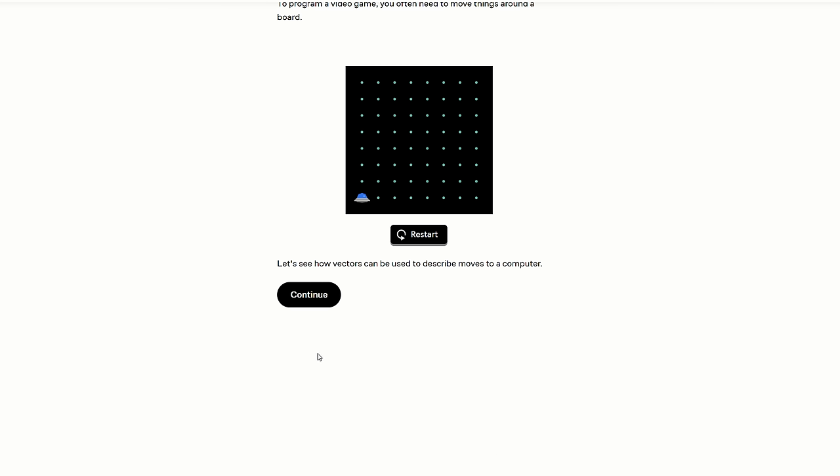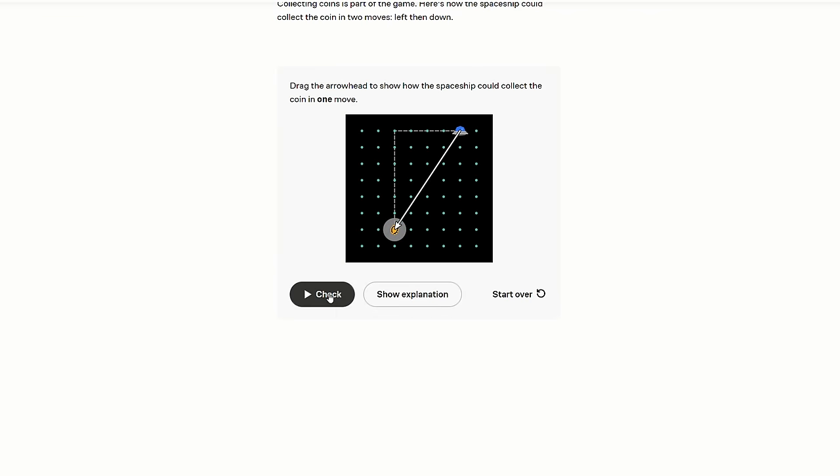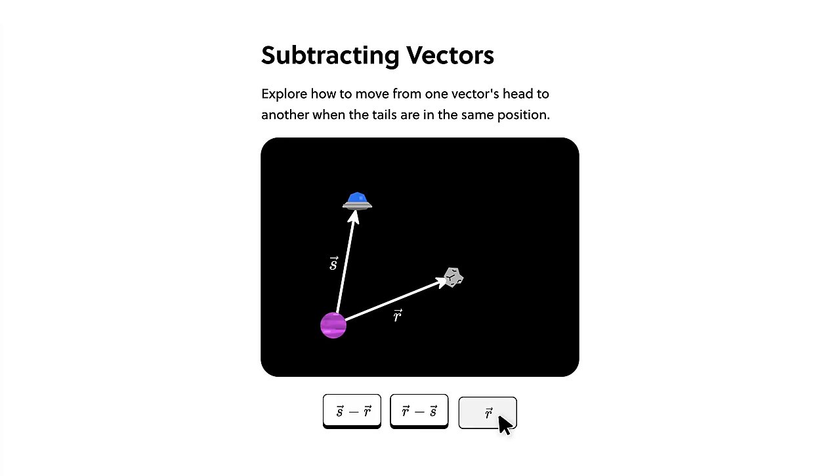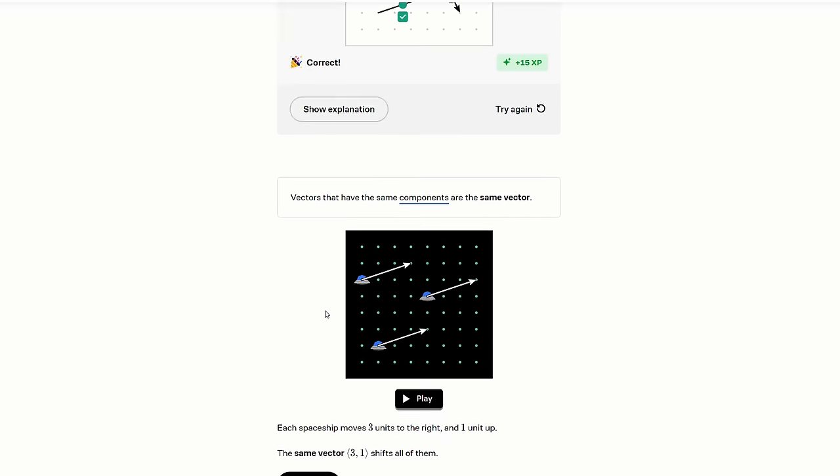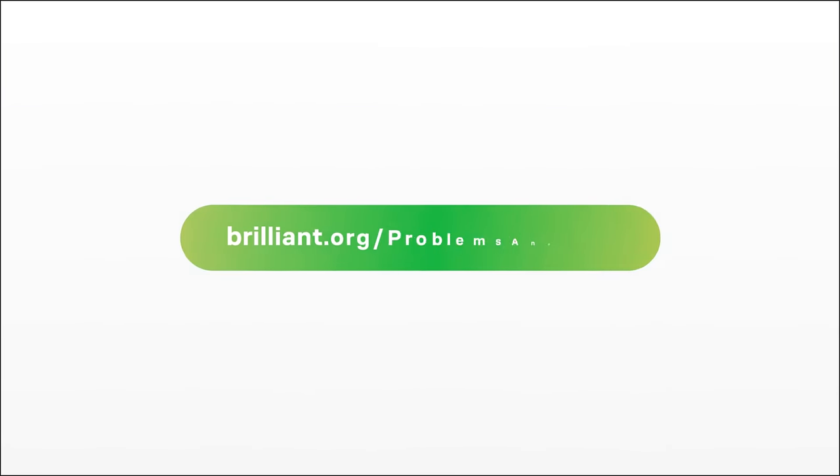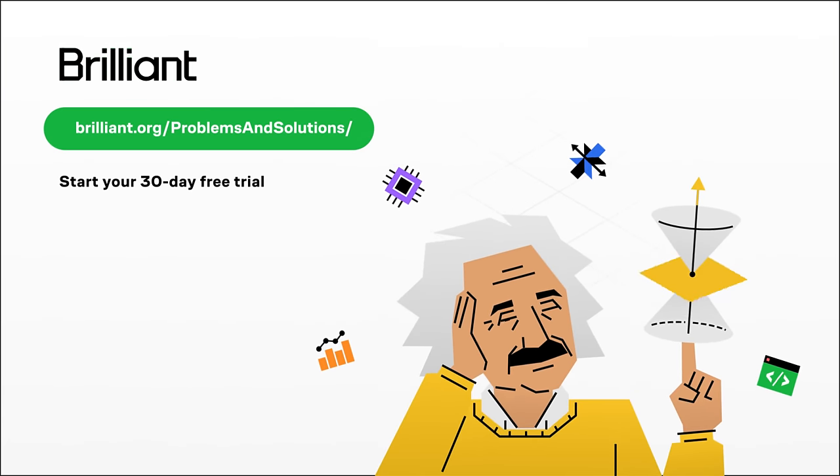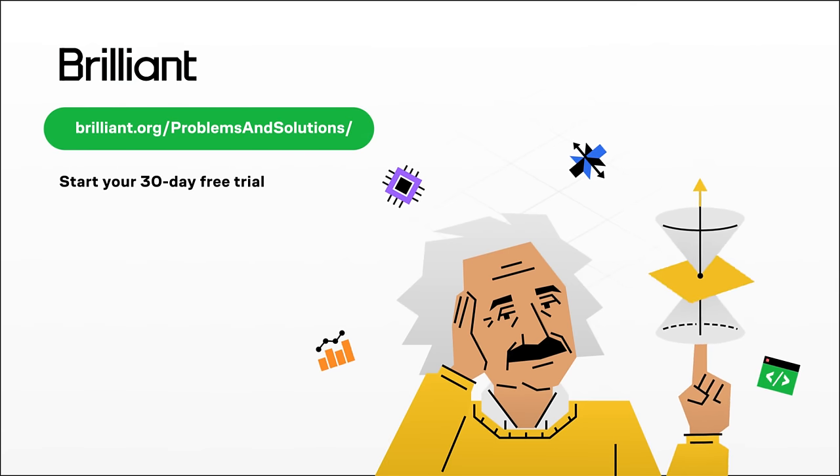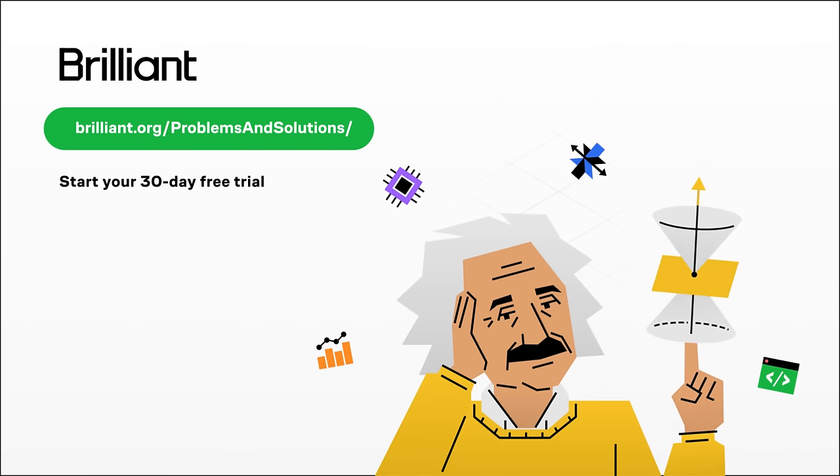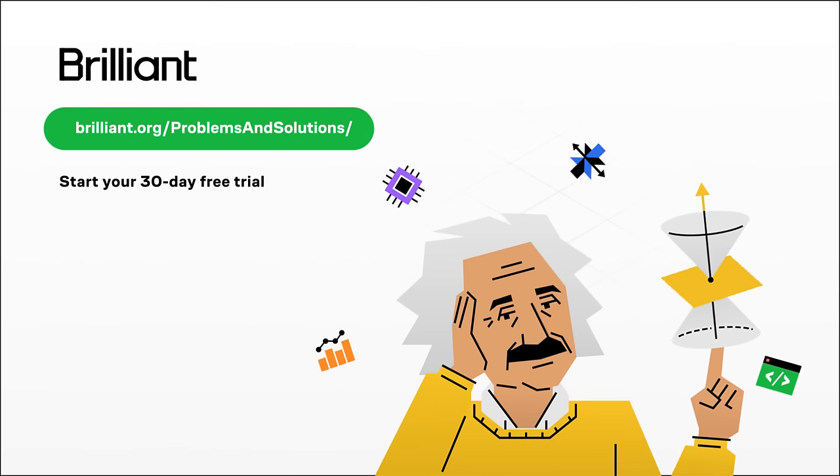Check out, for example, this course on vectors. Vectors are important mathematical tools used in physics. And in this course, you will gain intuition behind basic mathematical operations on vectors, but also on more complicated ones as you progress into more advanced lessons. If you want to give Brilliant a try, you can do it for free, for 30 days, using the link brilliant.org slash problems and solutions, or click in the link in the description. And you also get a 20% discount on annual premium subscription. So, thank you Brilliant for sponsoring this video.